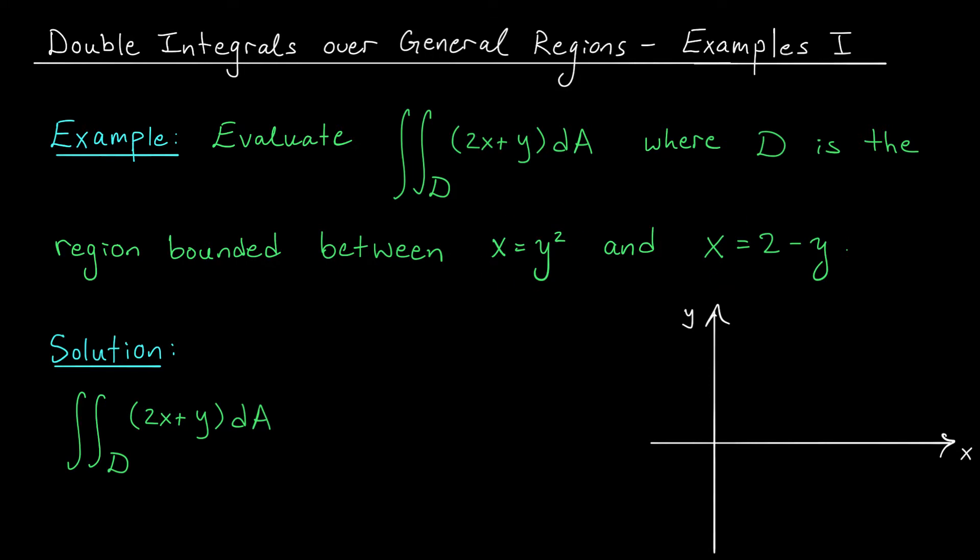Well x equals y squared, that's a parabola opening in the positive x direction. It looks something like this. The equation x equals 2 minus y on the other hand describes the equation of a line. If we rearrange this a little bit, we can write it as y is 2 minus x. So it has a y-intercept of 2 and a slope of minus 1. There's our line.